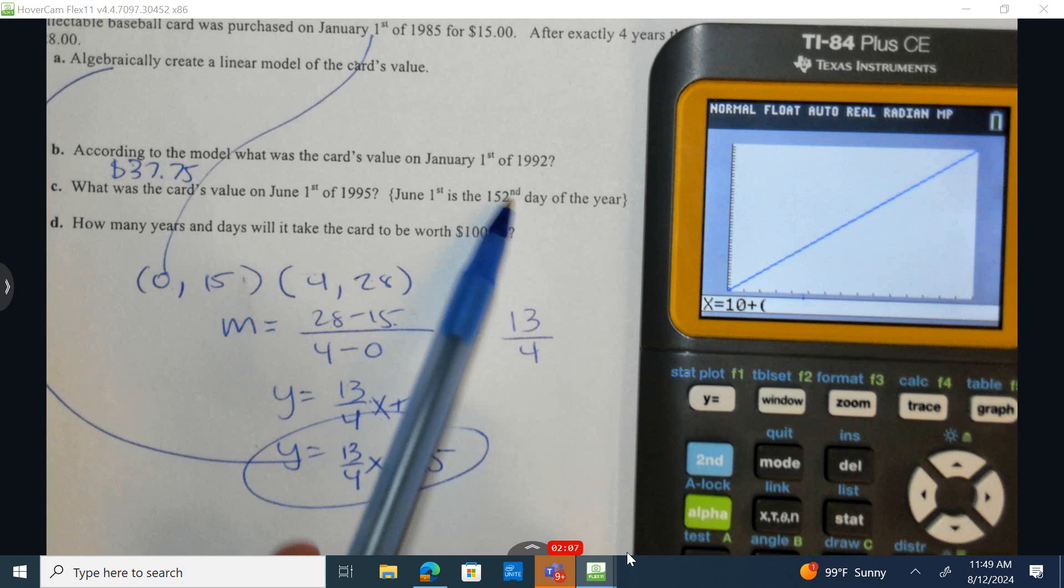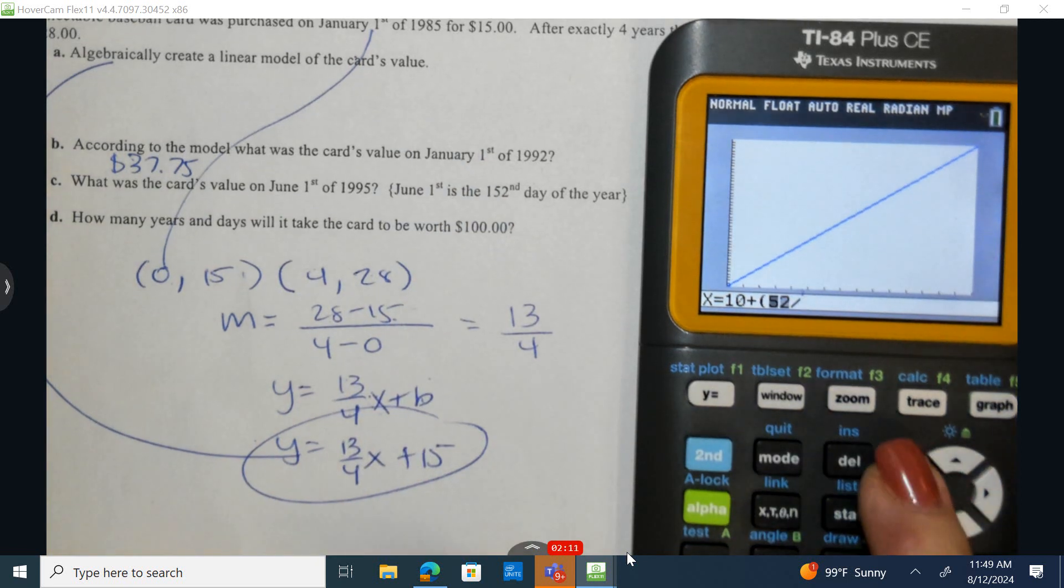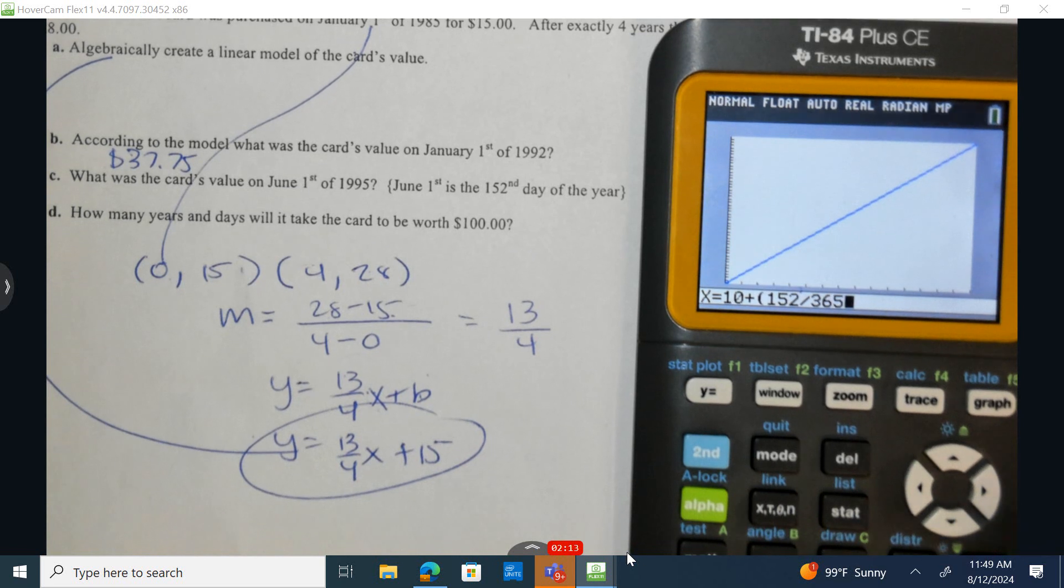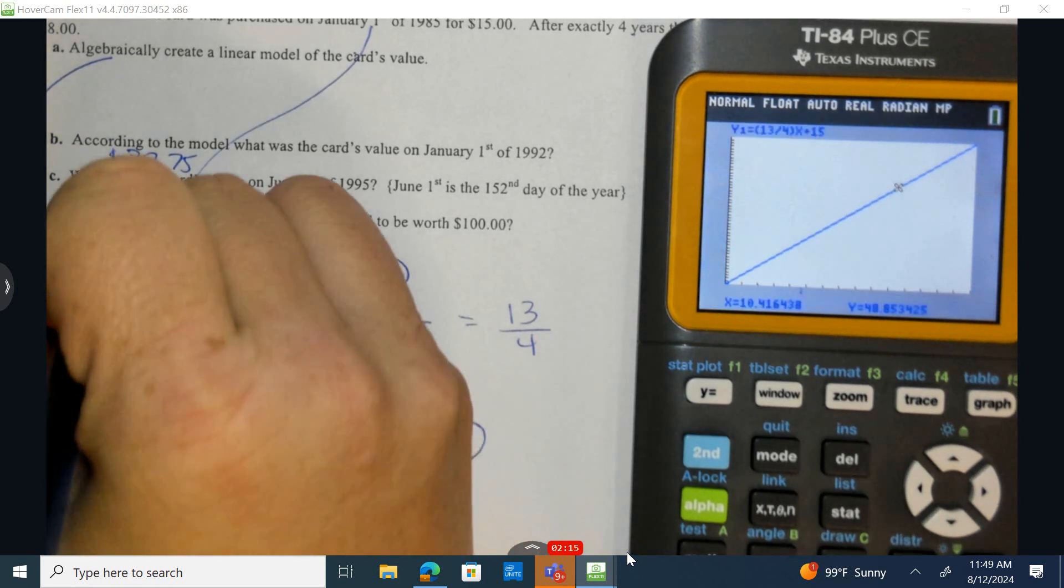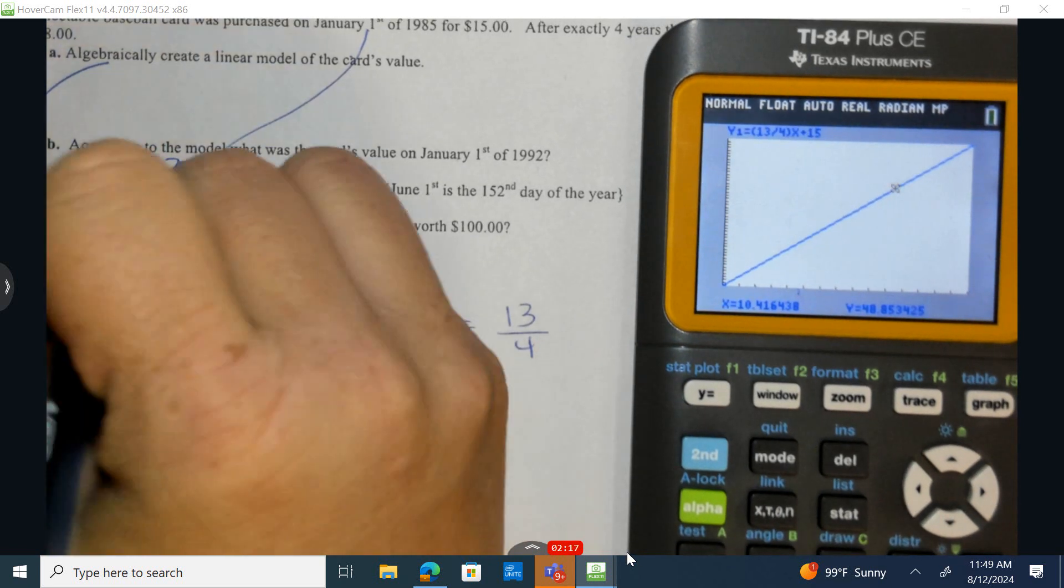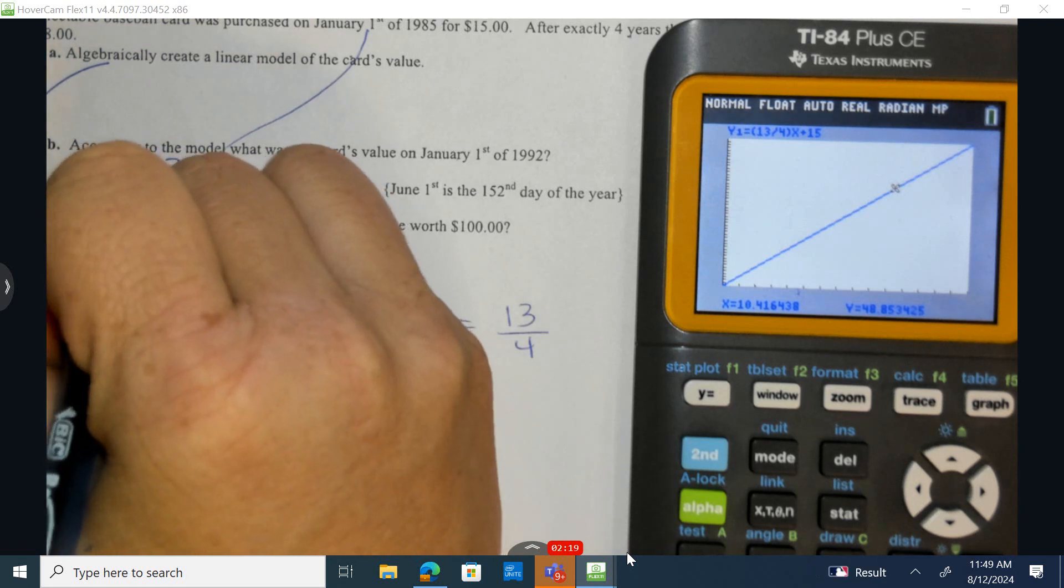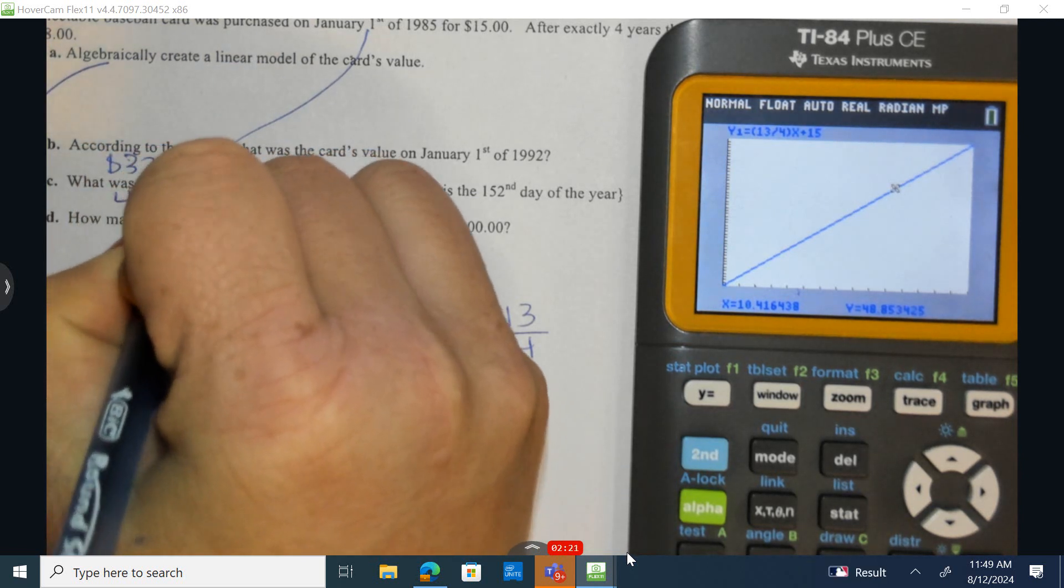It's 152 days past January 1st. So 152, how many days are there in a year? 365. And so we can assume the card's value on June 1st, 1995 would be $48.85.